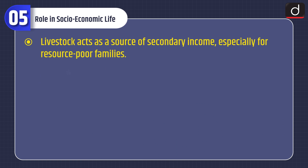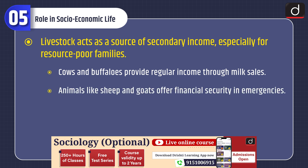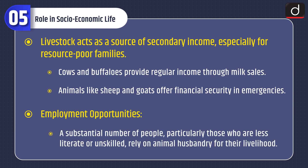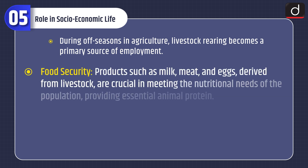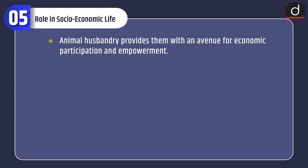Livestock acts as a source of secondary income, especially for resource-poor families. Cows and buffaloes provide regular income through milk sales, and animals like sheep and goats offer financial security in emergencies. A substantial number of people, particularly those who are less literate or unskilled, rely on animal husbandry for their livelihood, and during off-seasons in agriculture, livestock rearing becomes a primary source of employment. Products such as milk, meat, and eggs derived from livestock are crucial in meeting the nutritional needs of the population, providing essential animal protein. Women play a significant role in the care and management of livestock, contributing to gender equity in rural areas, and animal husbandry provides them with an avenue for economic participation and empowerment.